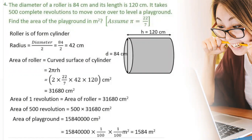So the area of one revolution is equal to the area of the roller = 31680 cm². Now the area of 500 revolutions = 500 × 31680 cm². So the area of the playground = 15,84,00,000 cm². To convert centimeters square to meters square, we divide by 100 × 100, giving us 1584 meter square.